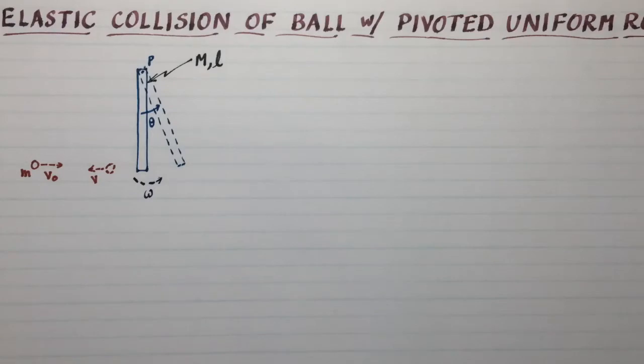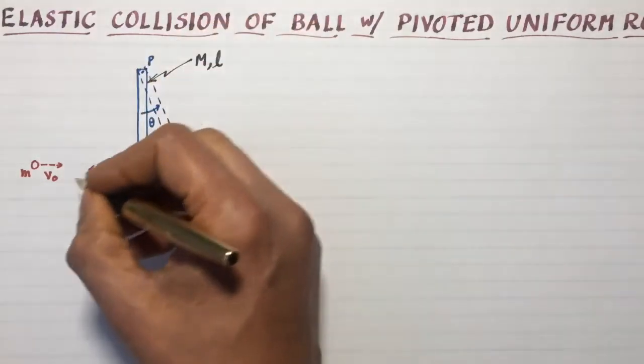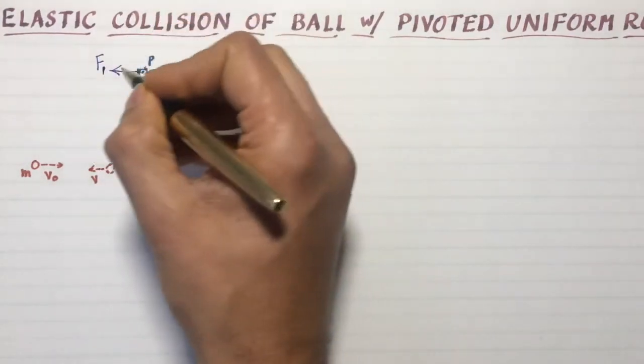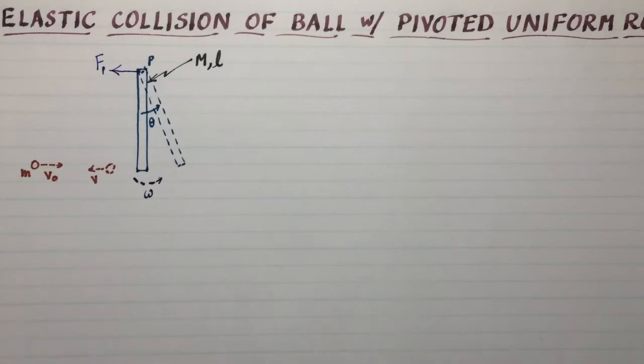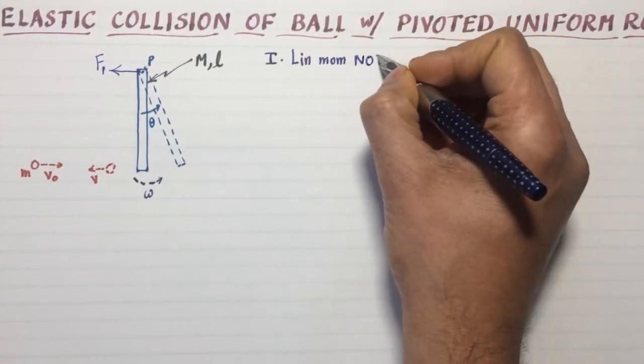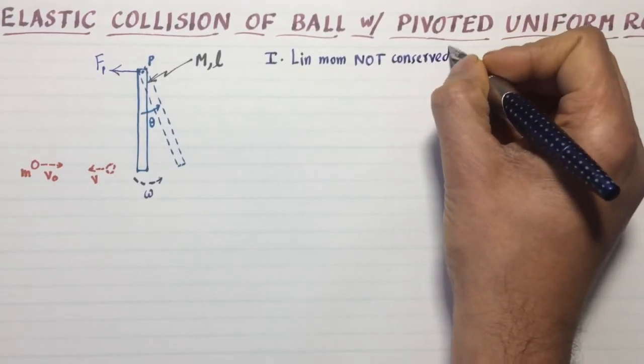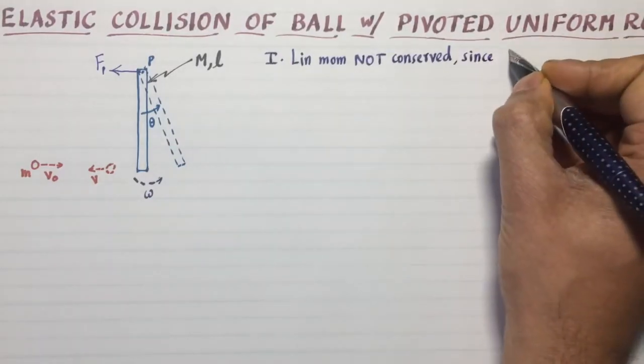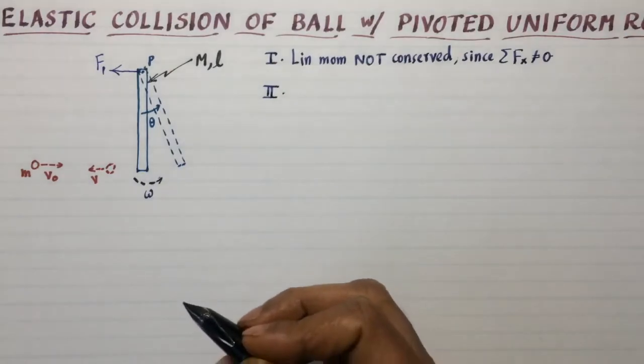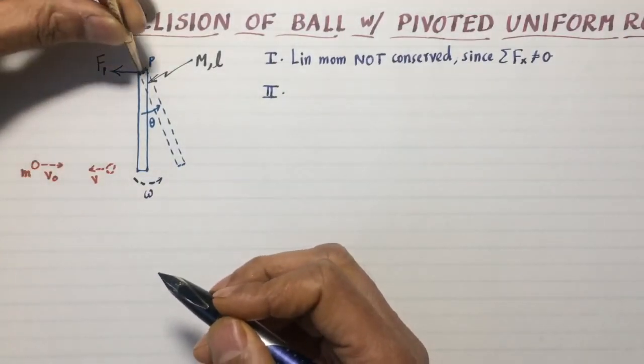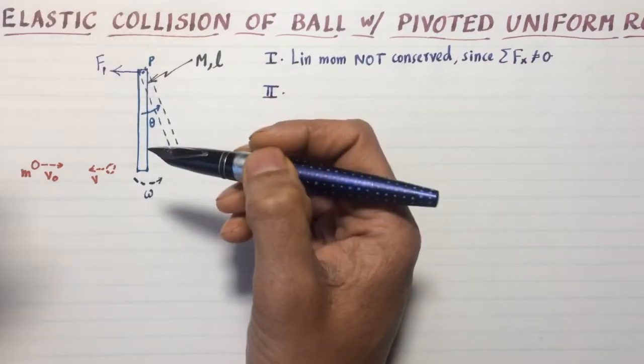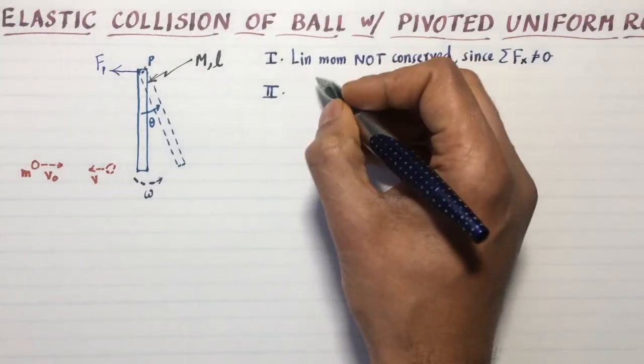Let's first ask if linear momentum is conserved. It actually is not, because as we saw in the previous problem, upon impact there's going to be a reaction force on the pivot, Fp. That means there is net external force in the x direction. So linear momentum is not conserved. Angular momentum is conserved, especially if you take the angular momentum about this pivot point. The impact force goes directly through the pivot point, so there's no torque, and gravity also goes right through the pivot point.